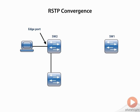In IEEE 802.1d Spanning Tree, we can create an edge port by issuing the command spanning-tree portfast. It's the same in Rapid Spanning Tree on Cisco switches — switchport portfast is how we would configure the edge port.